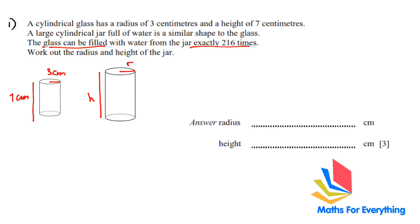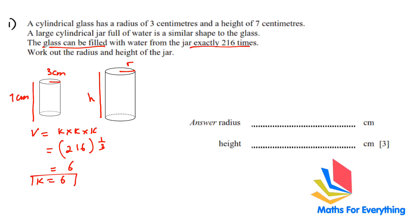To find the volume scale factor, if we have the scale factor k, we multiply it 3 times: volume equals k × k × k. Which number multiplied by itself 3 times gives 216? We take the cube root of 216 and the answer is 6. So k equals 6 — that is our scale factor.